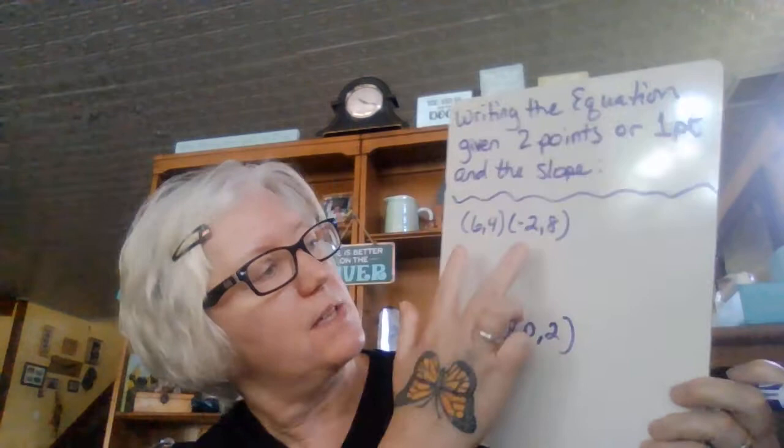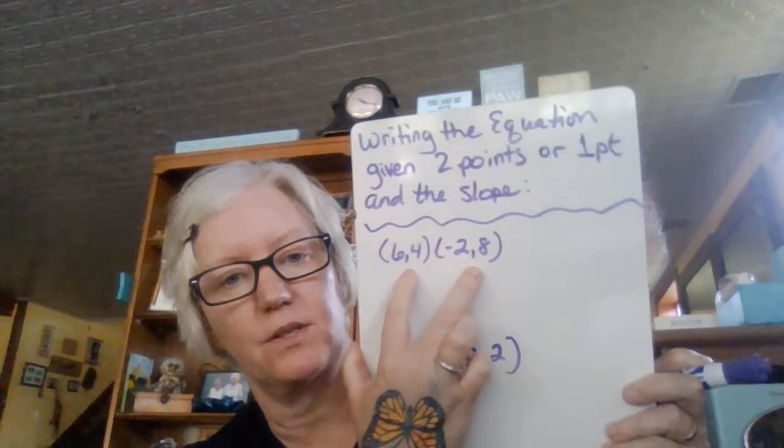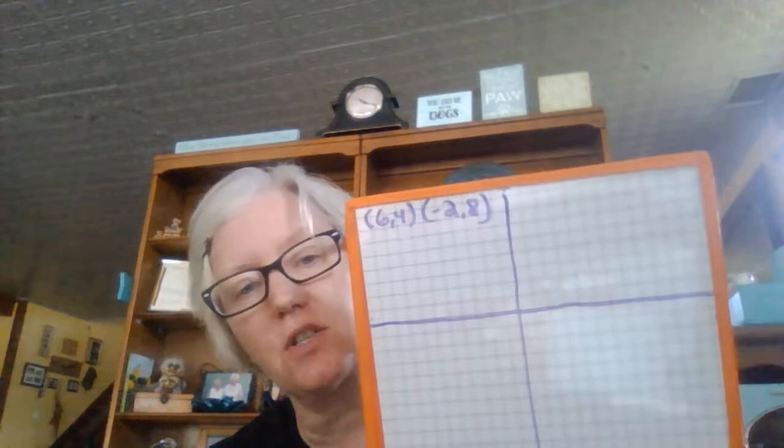So first, something like this. If I just say what is the equation in y equals mx plus b form of the line that goes through these two points, you could always go back and graph those two points. And I actually suggest it's not a bad idea to check your work by making a graph of these so that at least you know if your slope is the correct sign, positive or negative, and if it's crossing the y-axis at the approximate place where it should be. But we're going to be doing this algebraically.